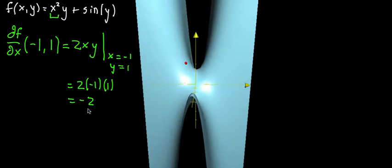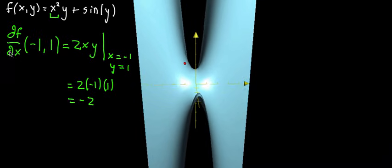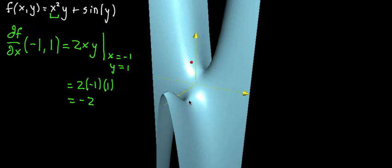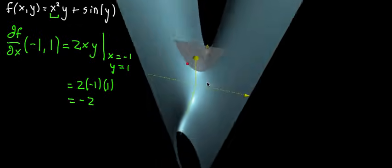But what does that mean, right? We evaluate this, and maybe you're thinking this is kind of a slight nudge in the x direction, this is the resulting nudge of f. What does that mean for the graph? Well first of all, treating y as a constant is basically like slicing the whole graph with a plane that represents a constant y value.